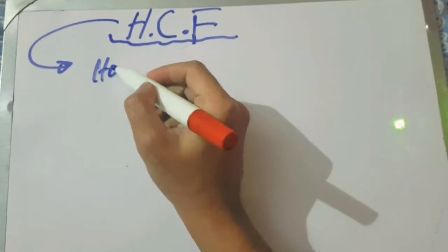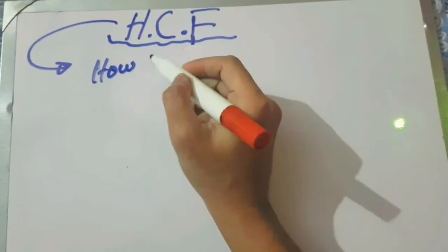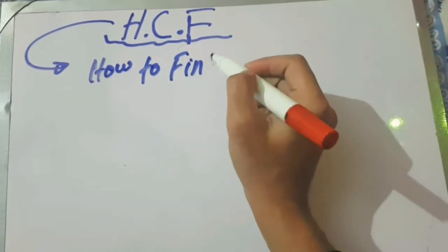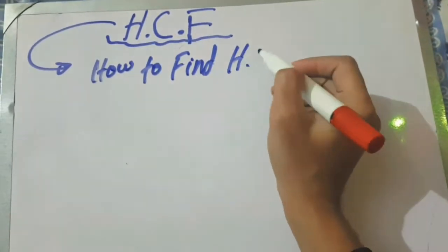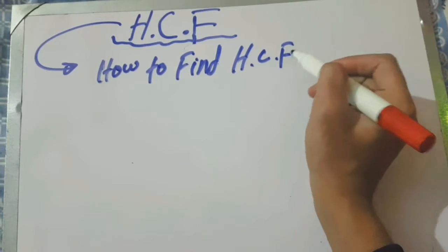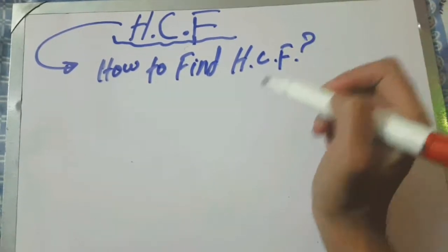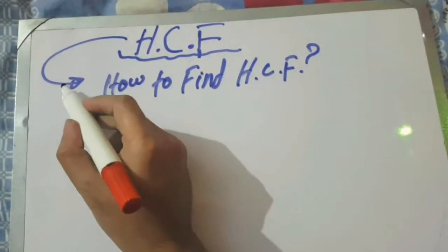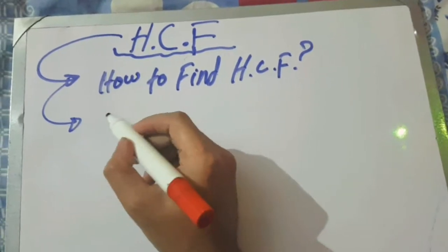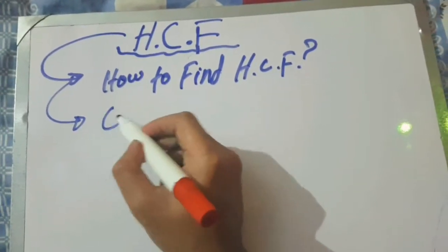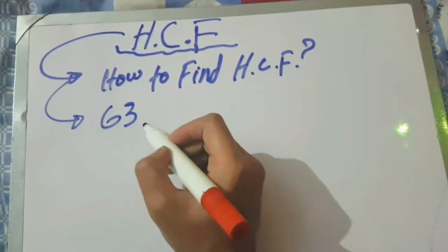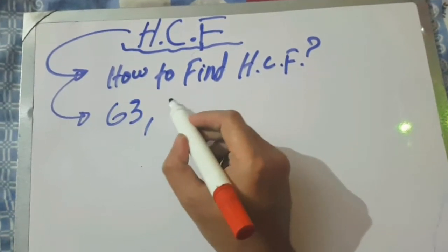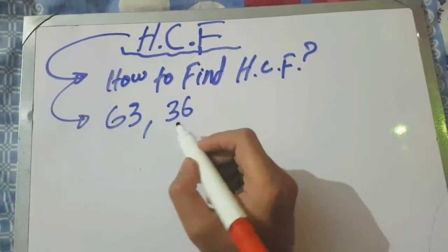Hi students, today we will find about the HCF — how to find the Highest Common Factor. We will start by taking any two numbers, let's take 63 and 36.